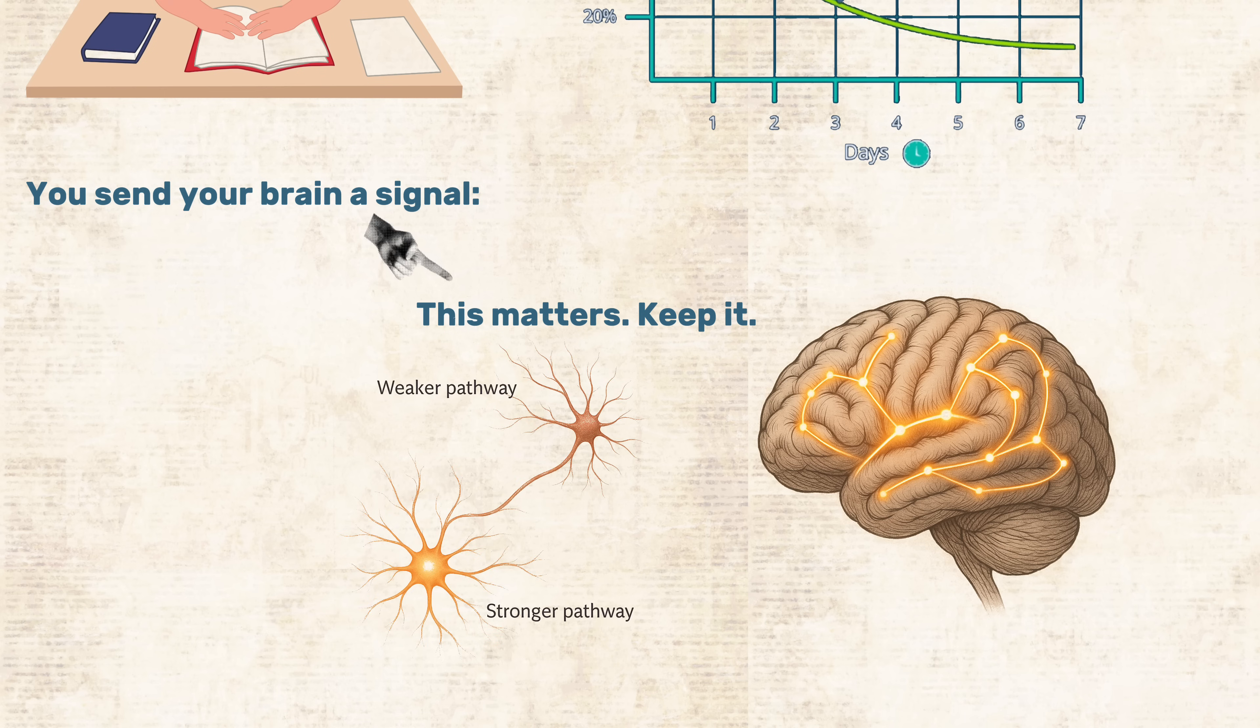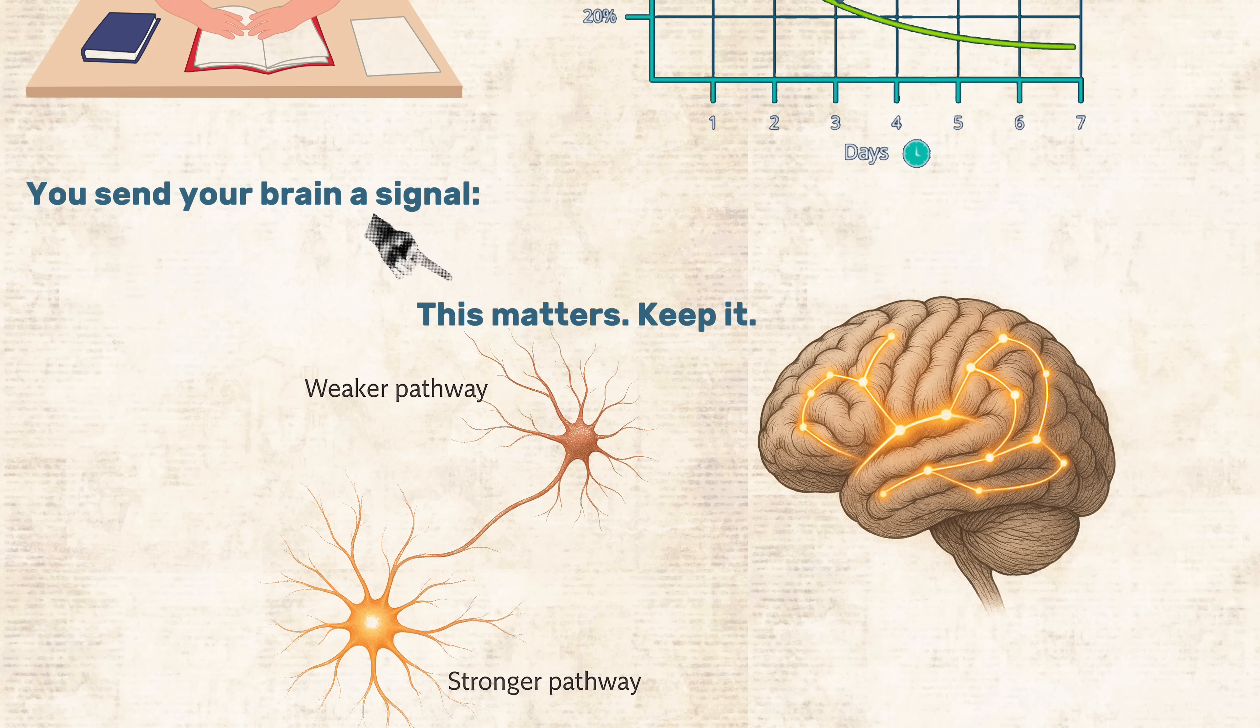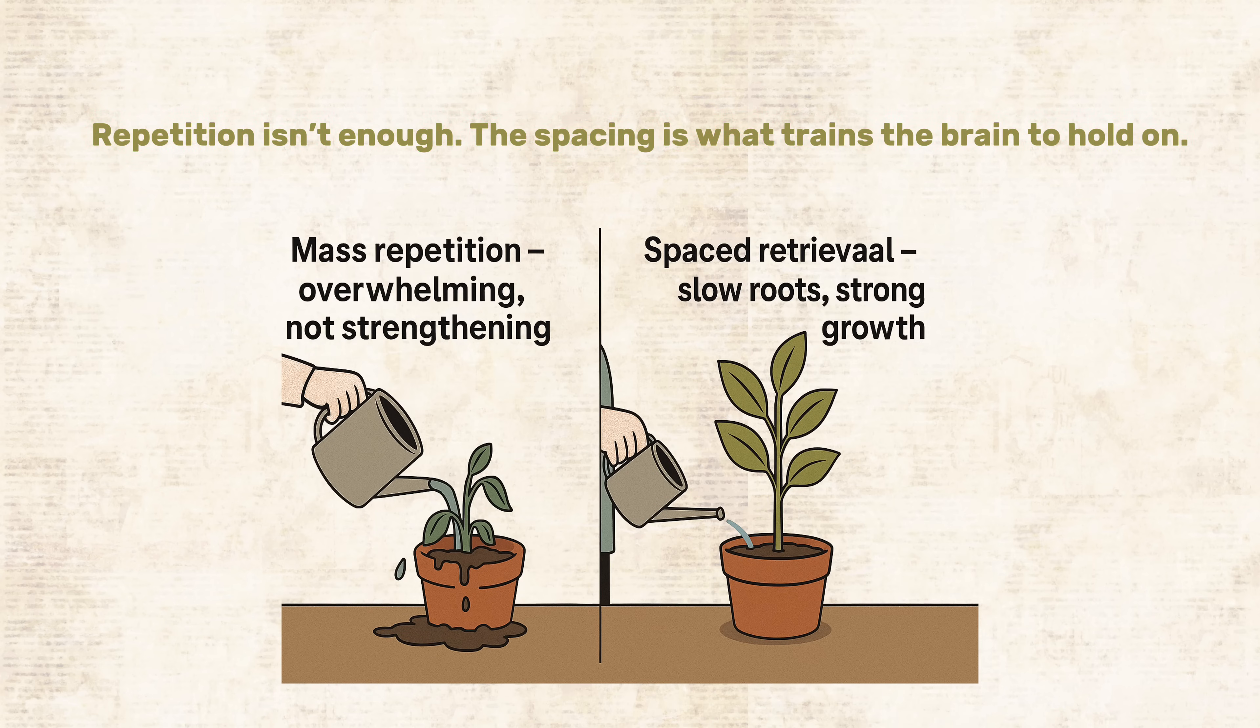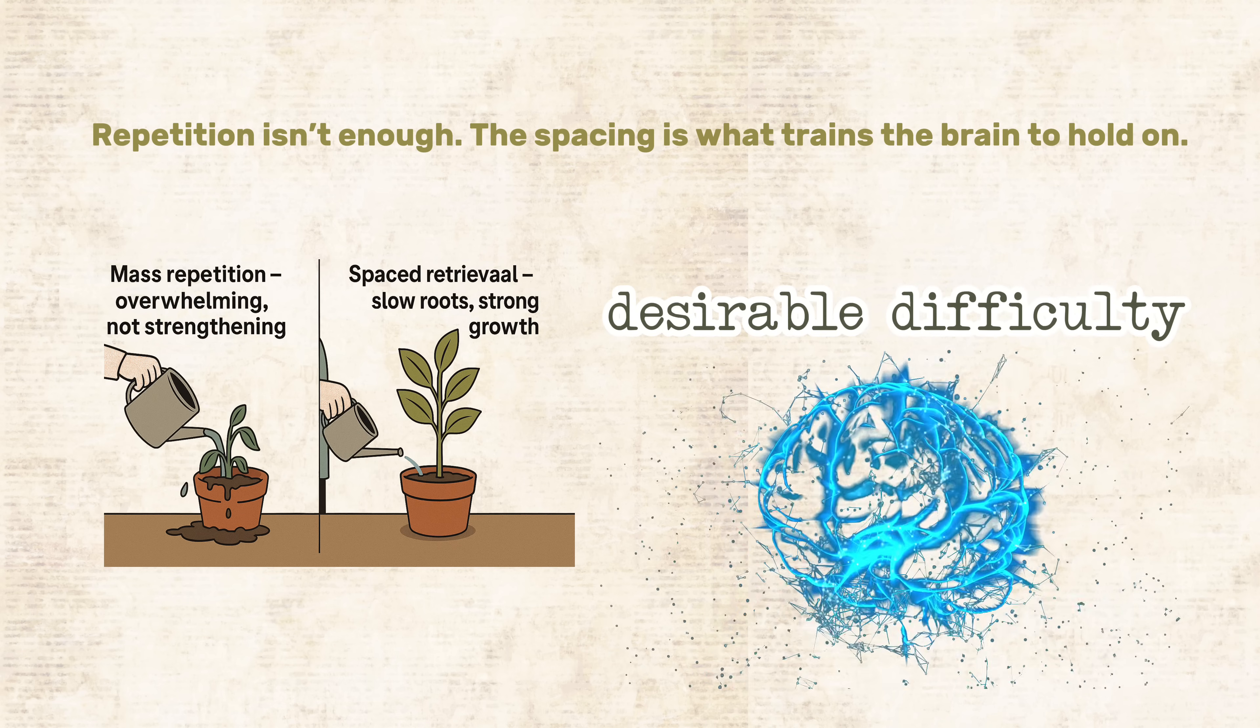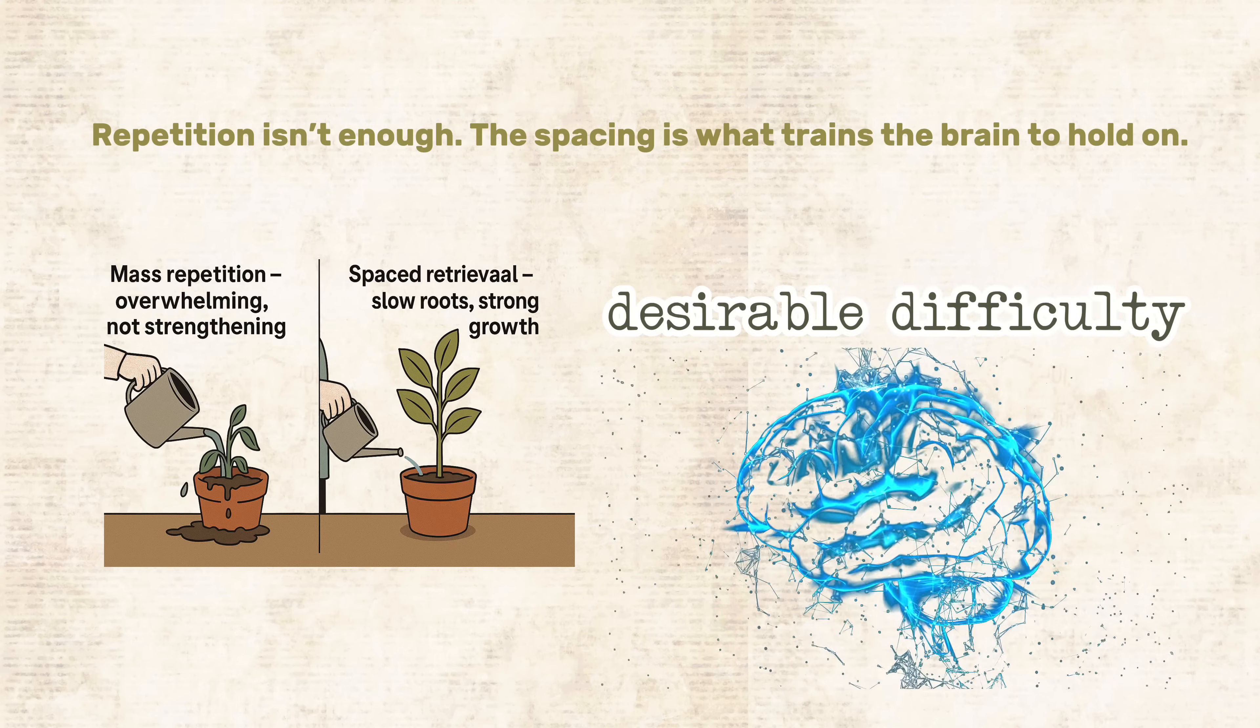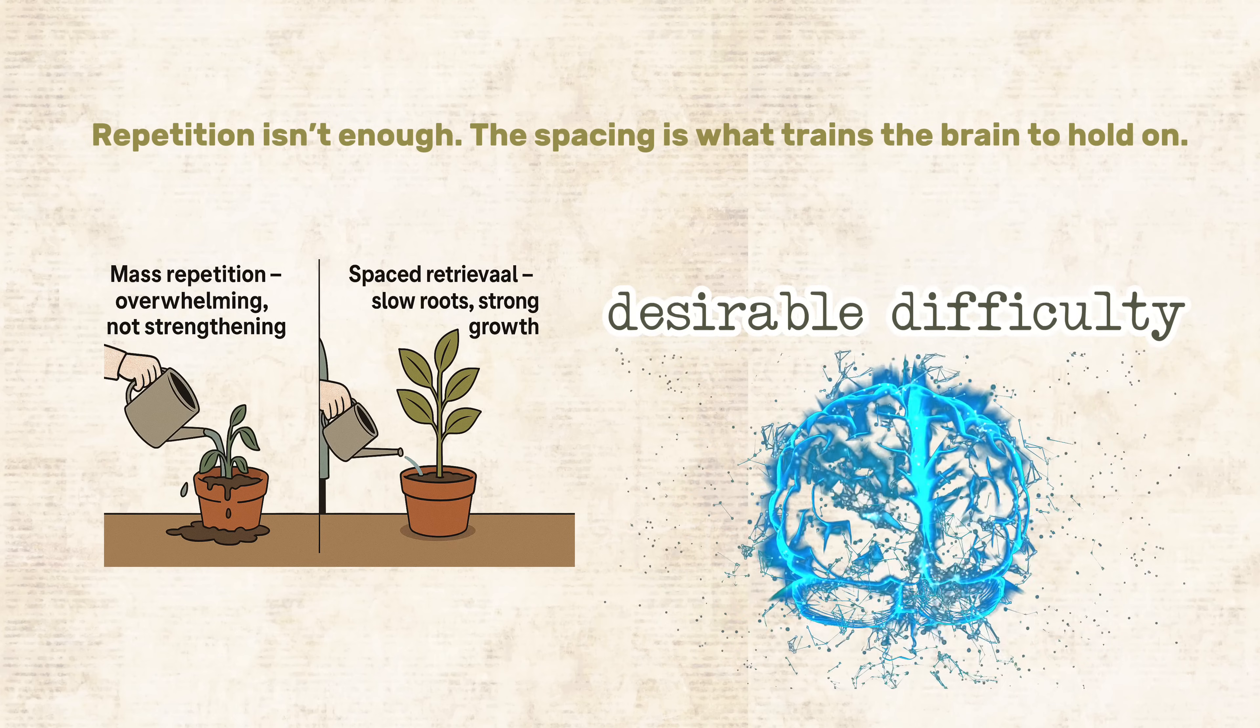The neuroscience behind it. Each time you retrieve and reinforce a memory, a process called long-term potentiation kicks in. This is when the synapses between neurons become more efficient. Repetition isn't enough. The spacing is what trains the brain to hold on. One key reason spacing works is because of desirable difficulty. When you space reviews out, remembering becomes harder, and that's a good thing. The struggle to recall is what rewires the brain most effectively.